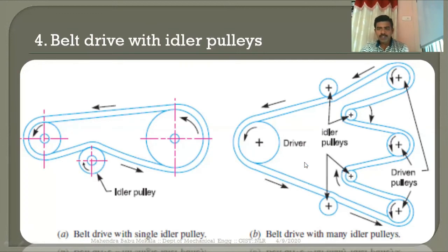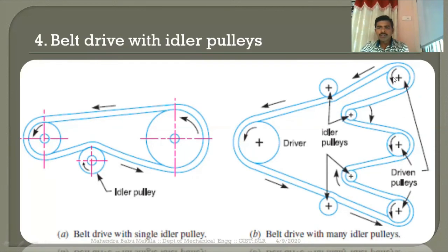Multiple idler pulleys can be used when you want to transmit power from one driving member to a number of machine shafts or driven shafts in parallel. The idler pulleys are positioned at different locations depending on the application. In this arrangement, there is only one driving member, but at the consuming end there can be multiple driven pulleys.